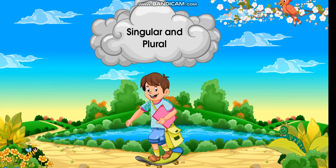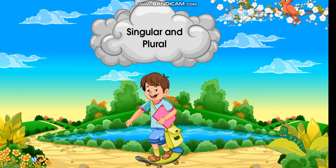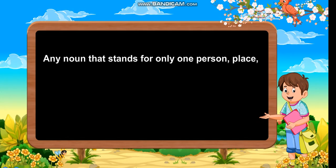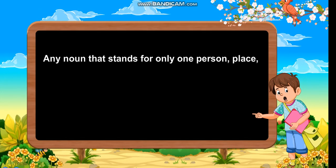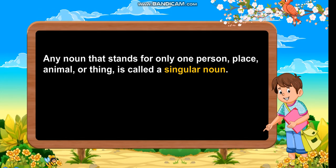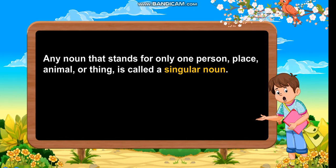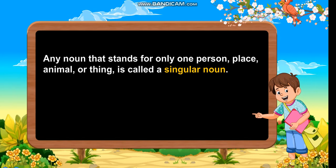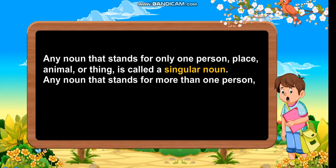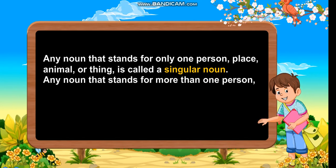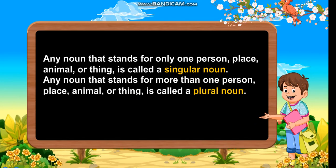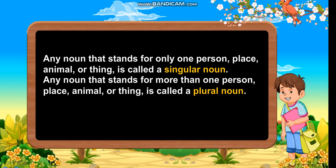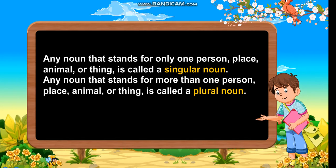Singular and Plural. Any noun that stands for only one person, place, animal or thing is called a singular noun. Any noun that stands for more than one person, place, animal or thing is called a plural noun.